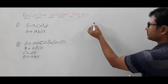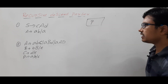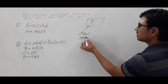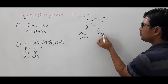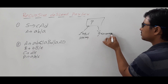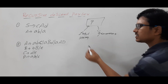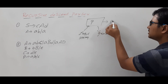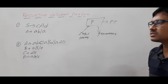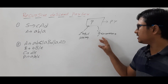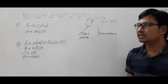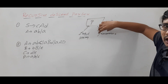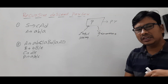Any parser will take two inputs: one is the input string and the other is the grammar. It will check whether the given input string can be generated from the grammar or not. If it can be generated, what is the parse tree? So every parser takes two inputs — the input string and grammar — and it generates the parse tree. The recursive descent parser also uses the input string and the grammar to generate the parse tree.